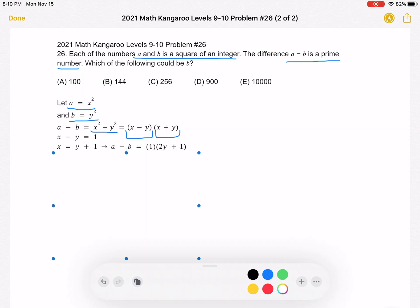So now we have that x minus y is equal to 1. Let's isolate x and write that x is equal to y plus 1.